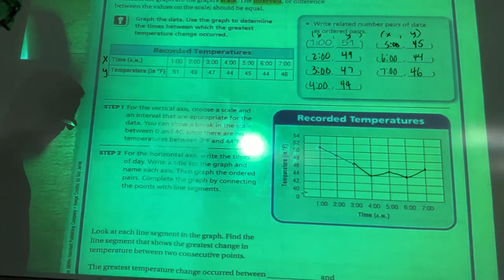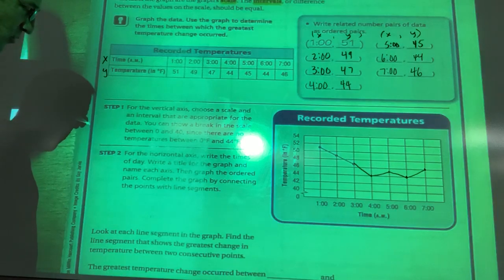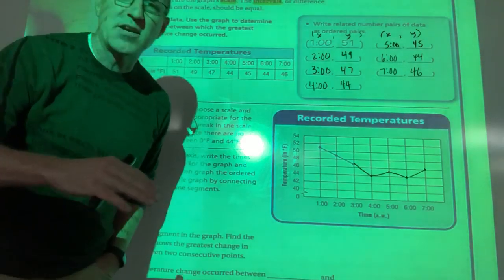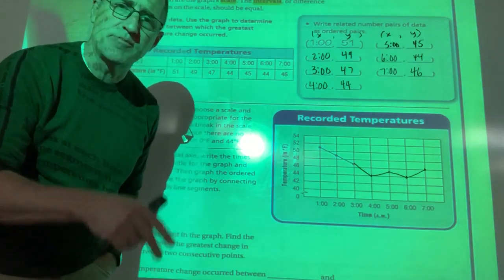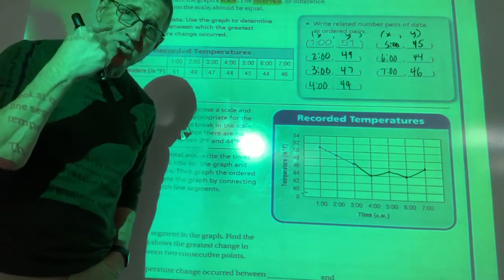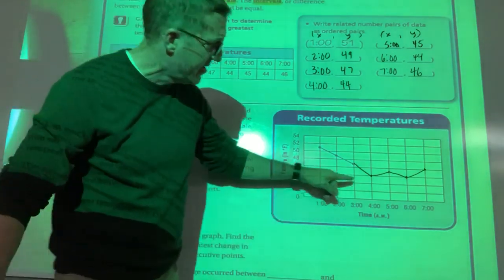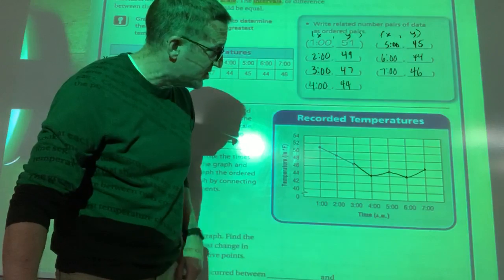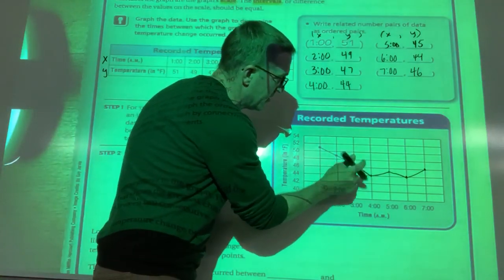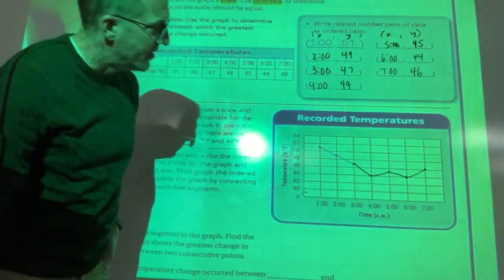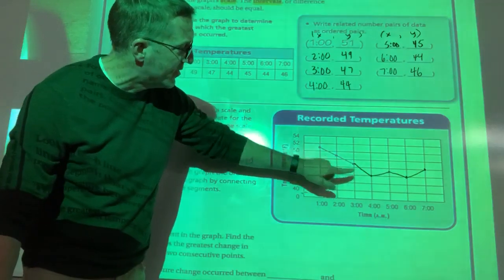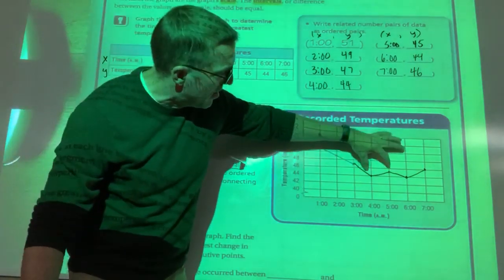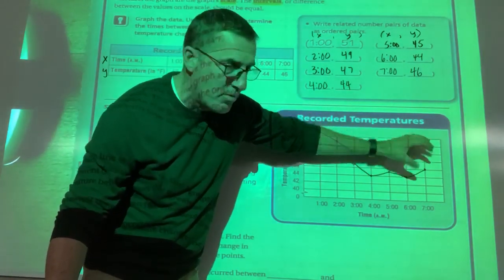Look at each line segment in the graph and find the line segment that shows the greatest change in temperature between two consecutive points. Where is the graph the steepest between two points? So that's the visual way to do it. I can just look at it and see where it's the biggest change. This looks to be a one and a half blocks where this is one block, one block, half a block, half a block, one block.